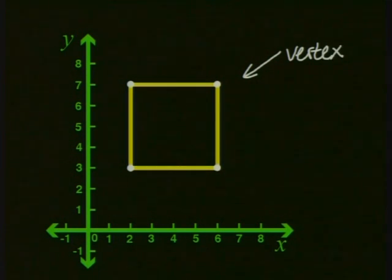We are going to label each vertex A, B, C, and D.